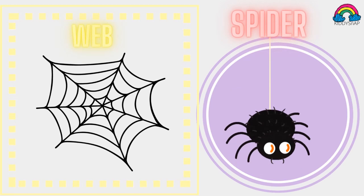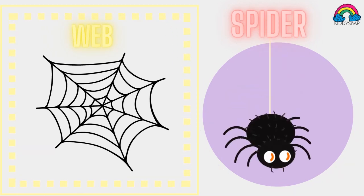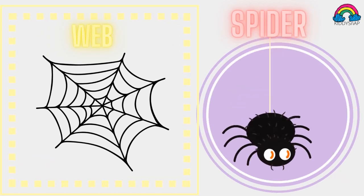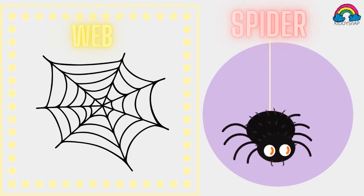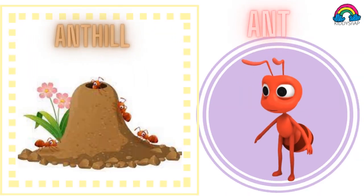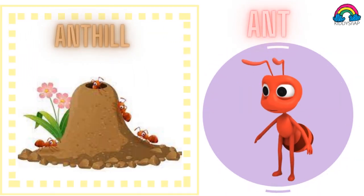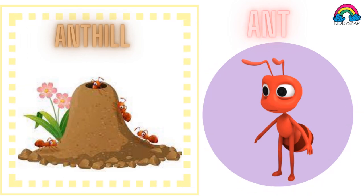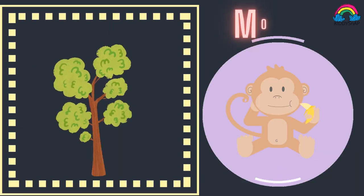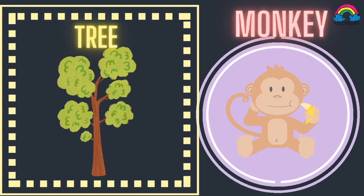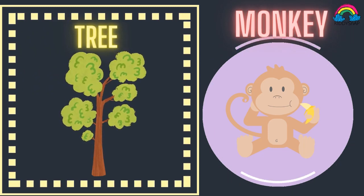Spider makes its own web and lives in it — the spider's house is called a web. Ant makes its own anthill and lives in it — the house of an ant is called an anthill. Monkey lives in a tree, so the monkey's house is a tree.